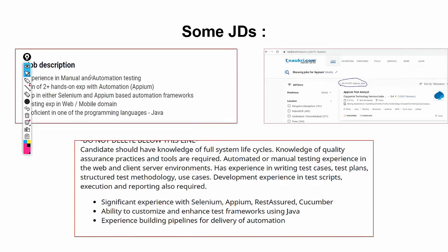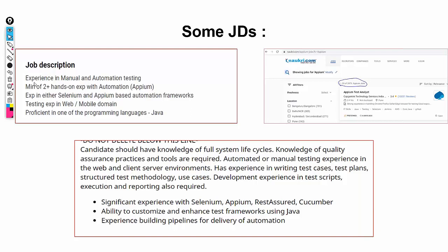Let's look at some job descriptions. I've pulled some from Naukri.com. Everyone is asking for automation with Appium, experience with Appium-based automation frameworks, and ability to create frameworks from scratch. In this course we will see how to create frameworks with Appium, integrating Maven and TestNG. Jobs also ask for proficiency in one programming language such as Java — so Java proficiency and Appium work experience are commonly required.